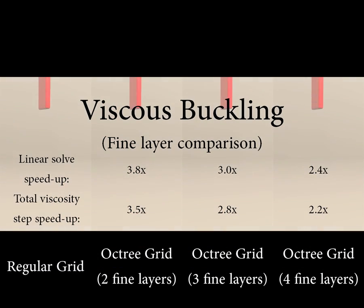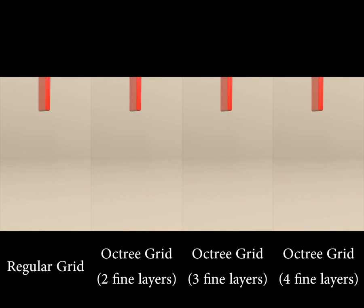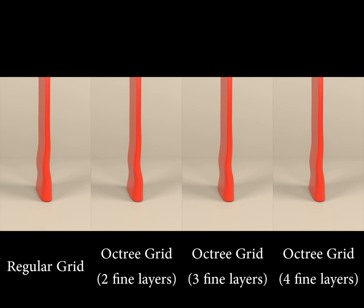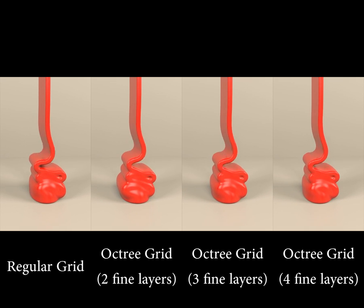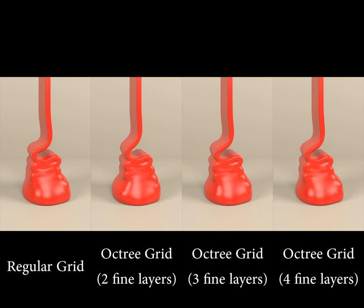Next we compare octree simulations with an increasing layer of fine cells at the liquid surface. The wider layers match the regular grid example slightly better, but with a significant drop in performance.